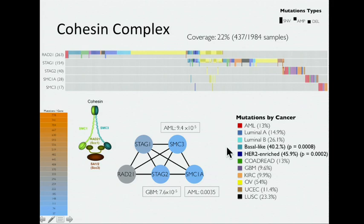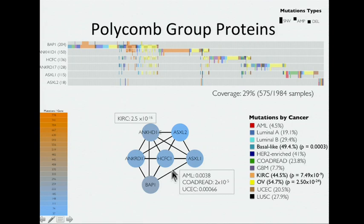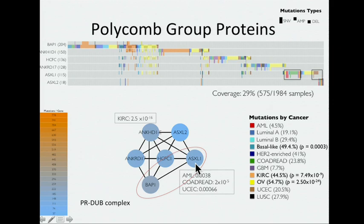Another one really fast — these polycomb group genes. This subnetwork has a few strange things driven by copy number, but what we do see here is the two components of this PR-DUB complex involving BAP1 and ASXL1, a little bit of gene-specific tendencies for mutation in ASXL1. BAP1 was recently shown to be an important gene in renal cell carcinoma, so not surprisingly there is a kidney cancer enrichment for this subnetwork.